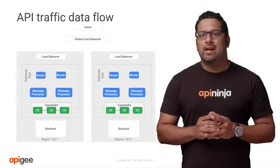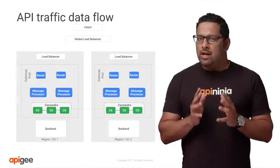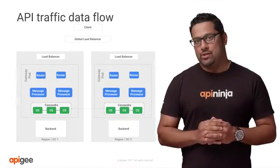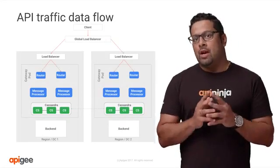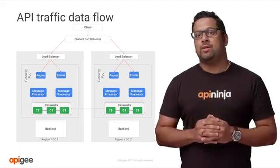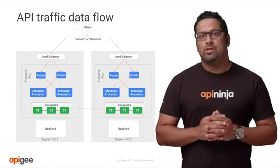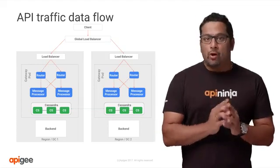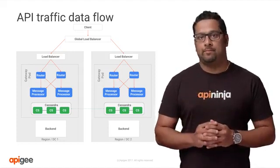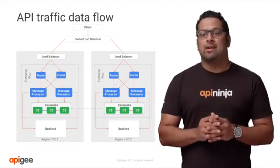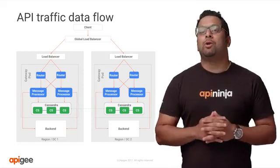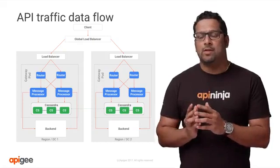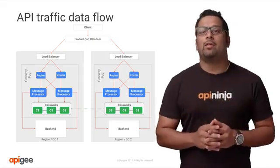Now that we understand the different components and their high-level functions, let's talk about what happens when an API call is made and the request hits Apigee. The routers receive the request and send them to the message processors. Message processor will then execute the policies within the API proxy implementation and forward the request to the backend system. Message processor interacts with Cassandra for token validation and other policies. The message processor waits for the response from the backend system, processes it, and then sends it back to the client via the router.